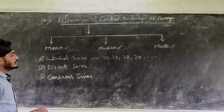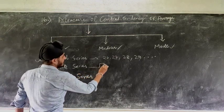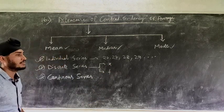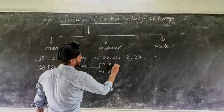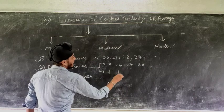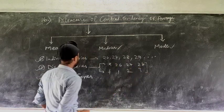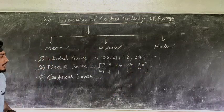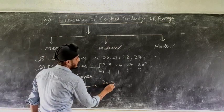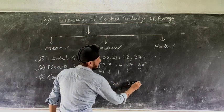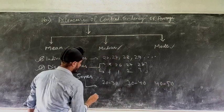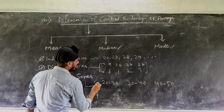When we talk about discrete series, you will get two values: x and frequency. For example, x values like 26, 27, 28 and corresponding frequency like 1, 2, 3 — this is called discrete series. When we talk about continuous series, it looks like class intervals: 20 to 30, 30 to 40, 40 to 50, with frequency given alongside.